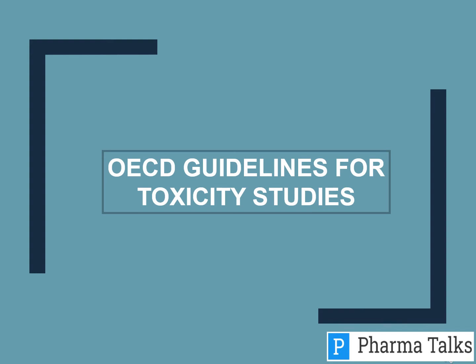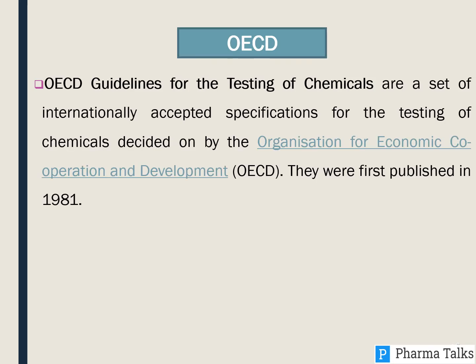OECD Guidelines for Toxicity Studies. The OECD Guidelines for the Testing of Chemicals are a set of internationally accepted specifications for the testing of chemicals, decided on by the OECD. They were first published in 1981.